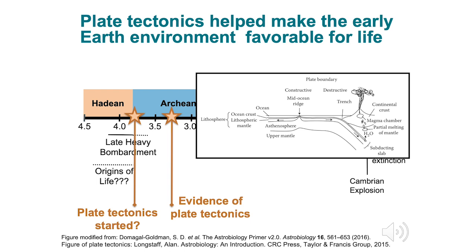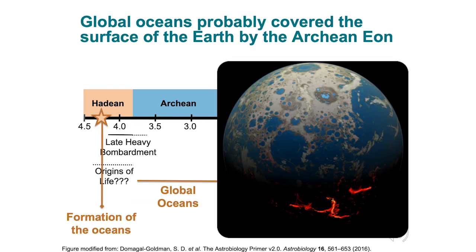A necessary requirement for plate tectonics is water. Before plate tectonics really got started, oceans probably started to form during the Hadean Eon, but it is not until the Archean Eon that there were really global oceans covering the surface of the Earth. This water didn't just come from nowhere, and there were at least three sources. One is from plate tectonics influencing the amount of water on Earth's surface. Another source is from volcanoes, which were very active at this time and would have helped the conversion of water vapor into liquid. The third source is delivery by comets and asteroids, which are rich in ice.